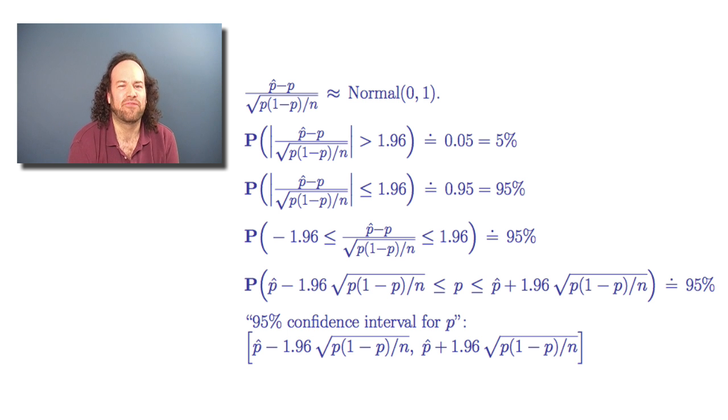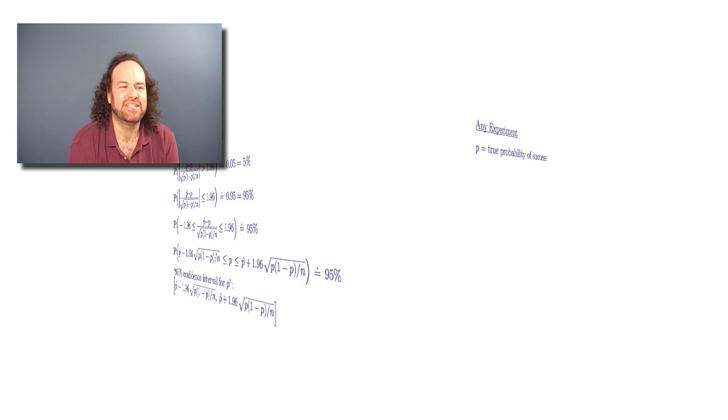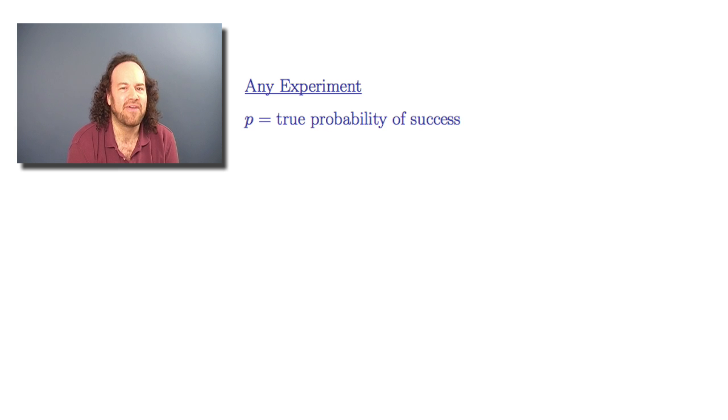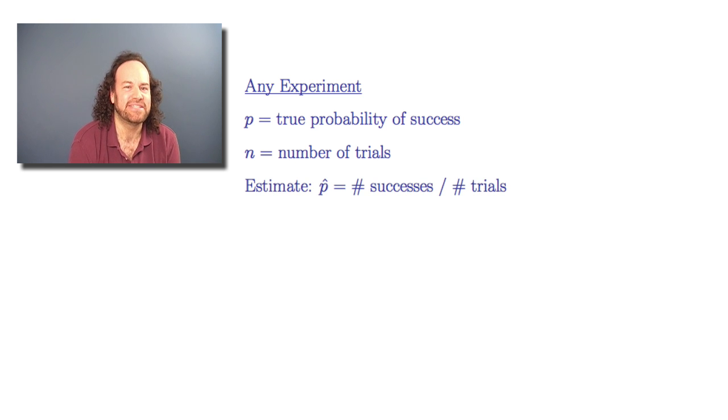Now if we understand what we did for the bottle cap, then it's easy to do it in general. We can say if we have any experiment with a certain probability of success, like getting red, and if we experiment and get n different experiments or trials, then let's look at the proportion of successes - the number of successes divided by the number of trials. We'll call that p-hat. It's our estimate of the true probability of success on each trial.